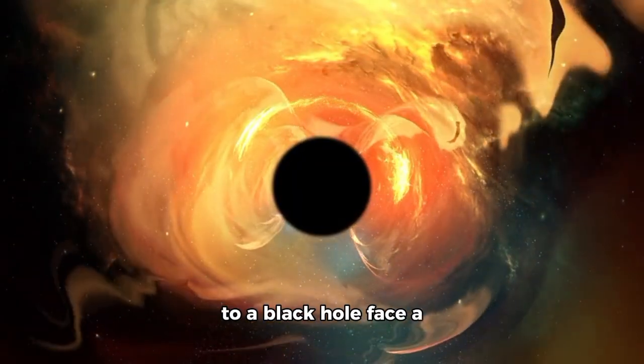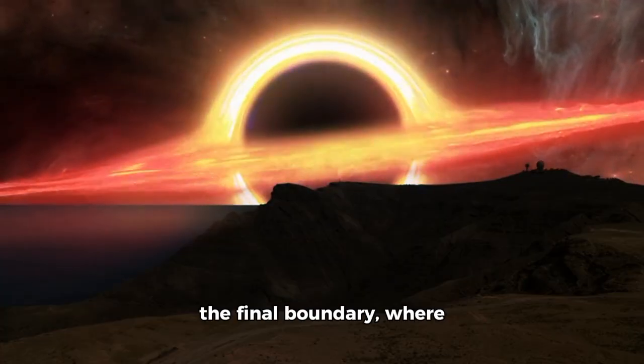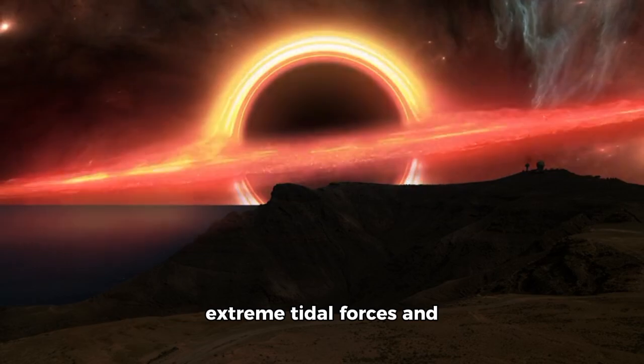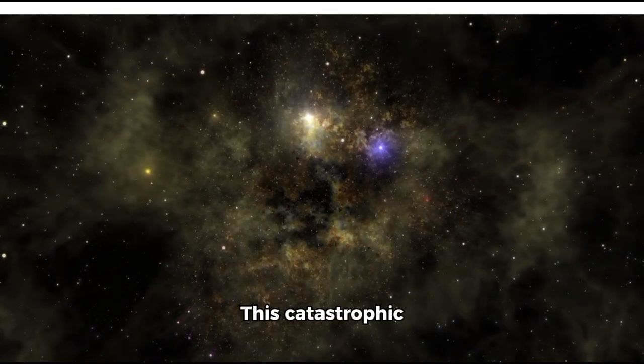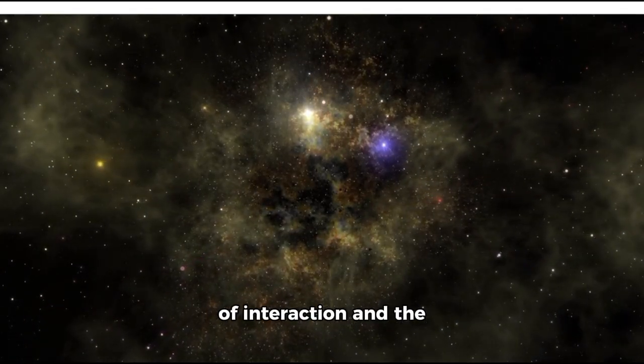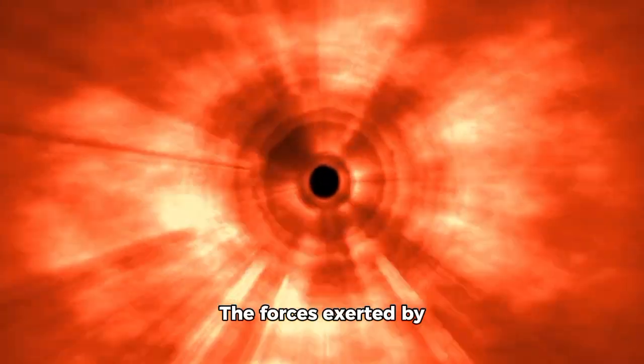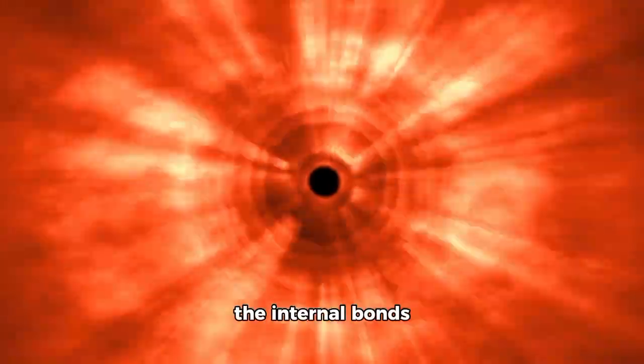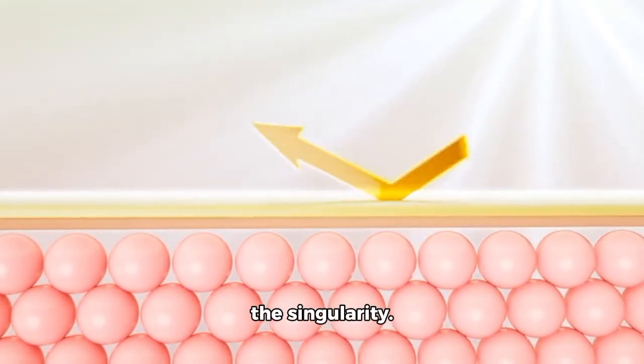Things that get close to a black hole face a fate determined by its relentless force. They are drawn inevitably toward the event horizon, the final boundary where they are subjected to extreme tidal forces and ultimately consumed by the singularity at the black hole's core. This catastrophic spaghettification is the extreme manifestation of a black hole's gravitational force. As an object approaches the event horizon, the gravitational gradient across its length becomes so extreme that it is stretched and twisted into a shape resembling strands of spaghetti. The forces exerted by the black hole overpower the internal bonds keeping the object intact, causing it to disintegrate into a stream of matter that eventually merges with the singularity.